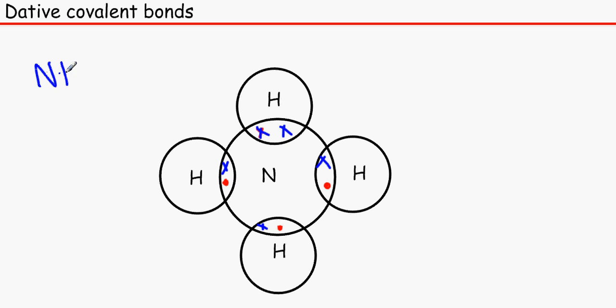Because this used to be NH3 and it used to have a lone pair. We're going to come to lone pairs in a minute. And then a Hydrogen plus atom came and that's basically a proton by the way. And then that made NH4 because this was donated by Nitrogen.